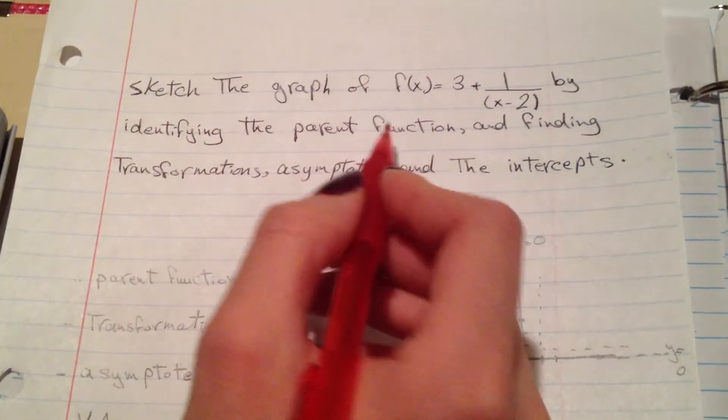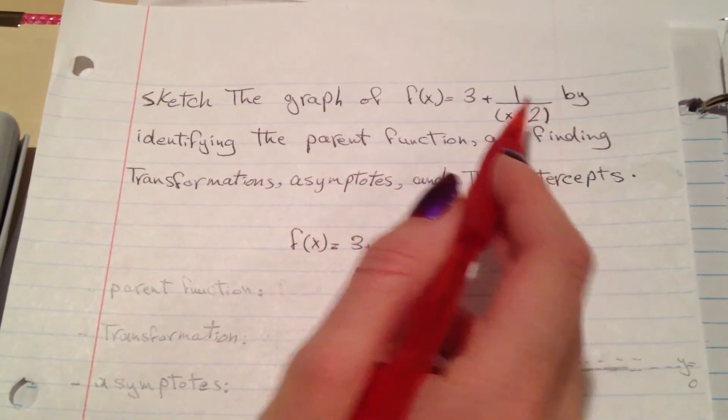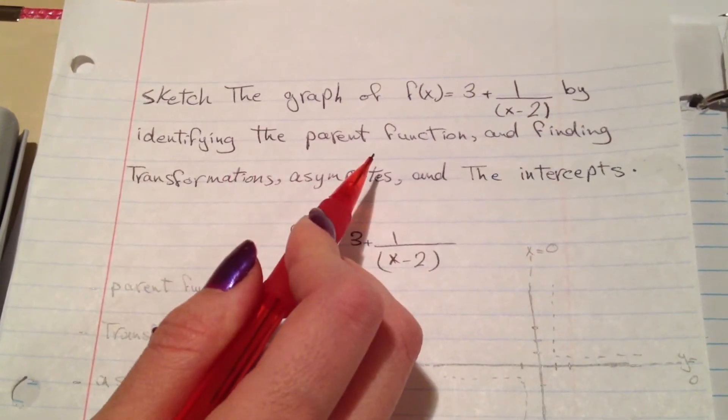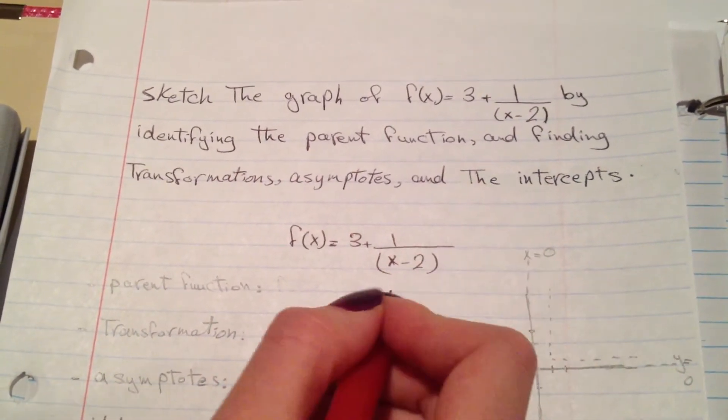This question asks to sketch the graph of f(x) = 3 + 1/(x-2) by identifying the parent function and finding transformations, asymptotes, and intercepts.